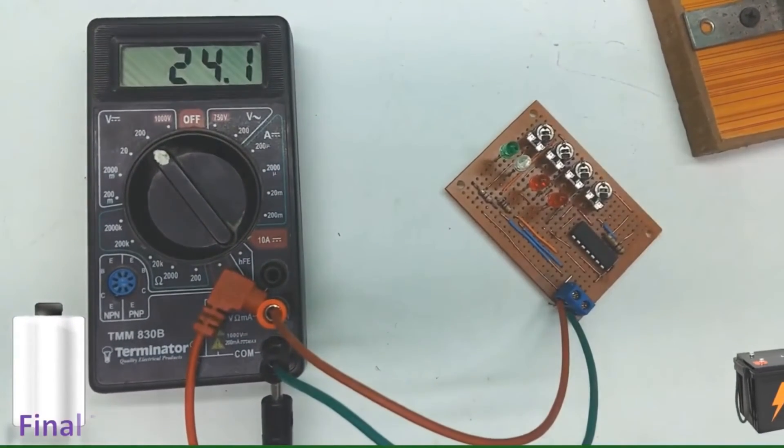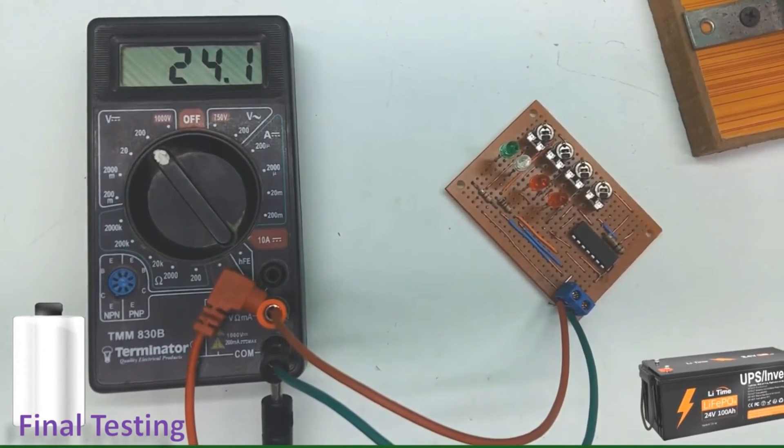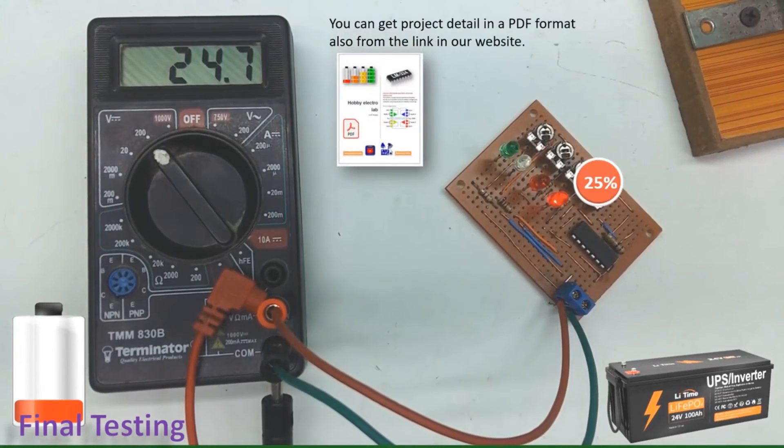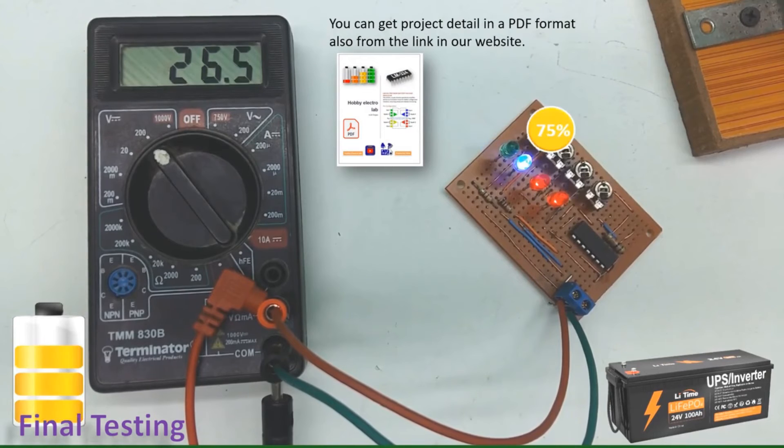We have now reached the testing phase of our customizable battery level indicator. As the battery voltage increases or decreases, the level indicator circuit activates or deactivates LEDs corresponding to the voltage level, providing a clear status of the battery.